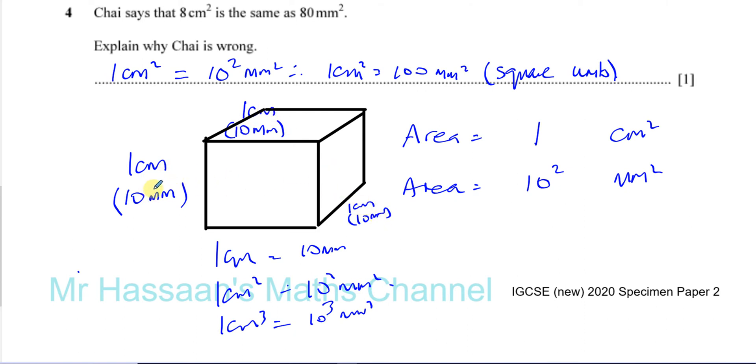And 10 times 10 times 10, which is 10 mm cubed. So you cube the normal conversion.